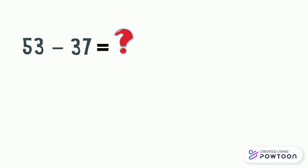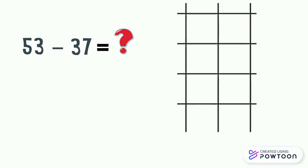This is the place value chart. It is made up of two columns: the tens place column and the ones place column. We want to put the numbers 53 and 37 in this chart.